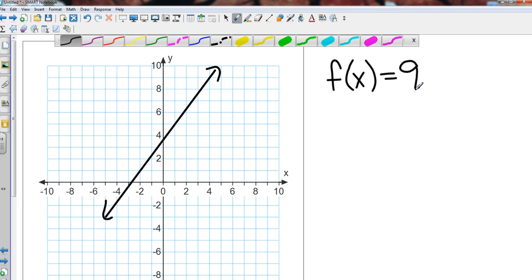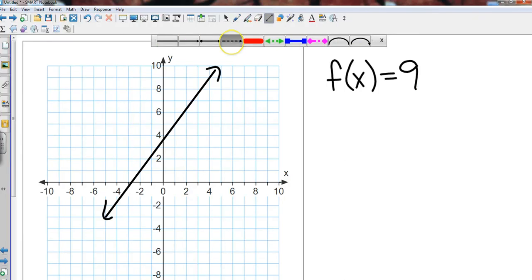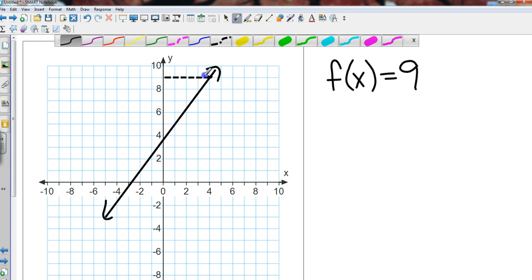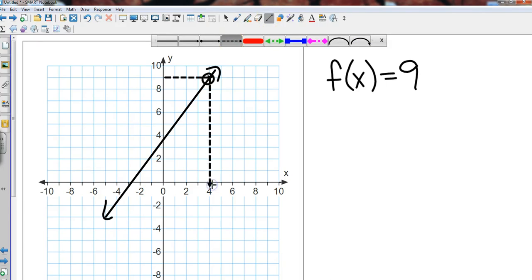And so basically what I'm doing is I'm going on this graph until, since my x is over here, until my y value is nine. Well here is my y value of nine, so it's going to end up right there. That's my y value of nine, so my x value where y is nine is four.